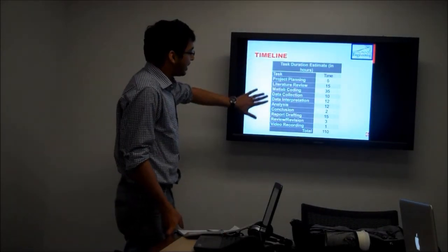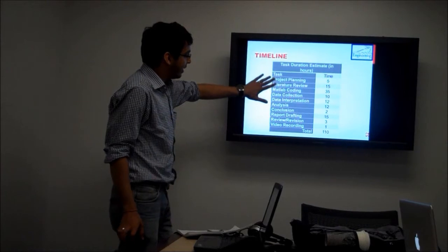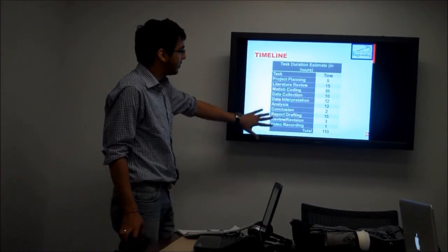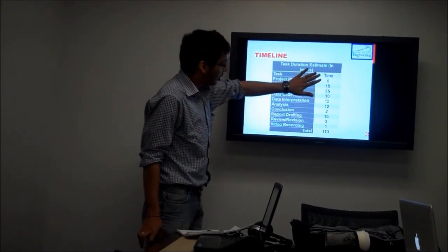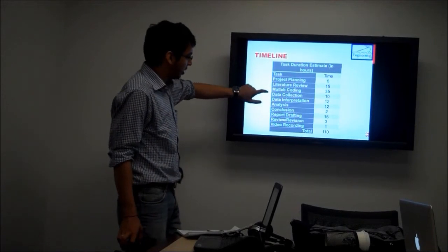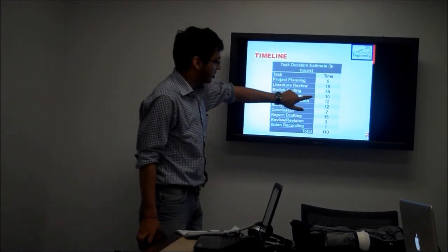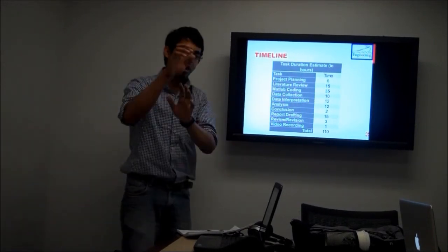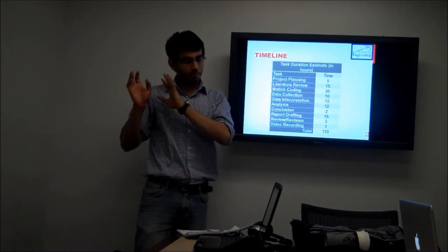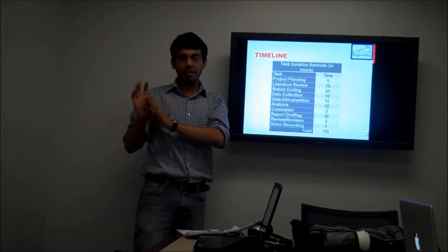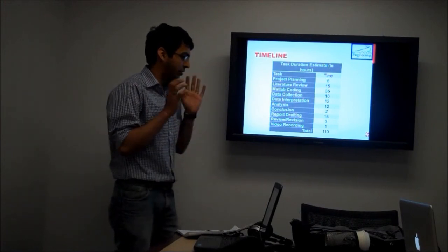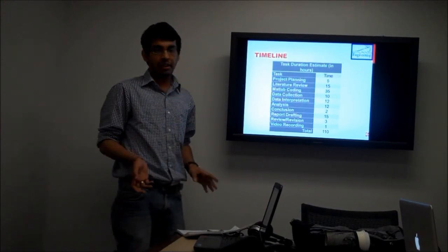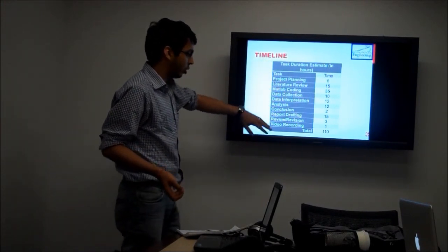Now here is the distribution of hours that went into each and every phase of the project. So project planning took around about 5 hours. The most part of the project was MATLAB coding which took around 35 hours, because we coded a lot of different error control techniques, and then we coded for a communication channel, and we had written a lot of different codes.